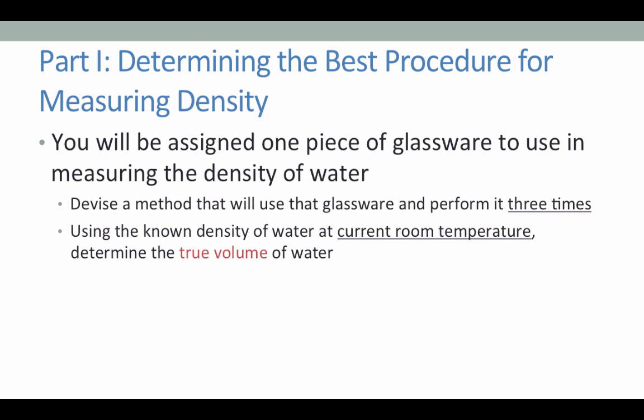You will be divided into groups, and each group will be assigned one piece of glassware to use in measuring the density of water. As I said earlier, the density of water is about one gram per milliliter. In fact, it is exactly one gram per milliliter at four degrees Celsius. At other temperatures, water becomes less dense. Therefore, we will report the density of water at the temperature that we actually have. Your task will be to devise a method that will use the glassware you were assigned to measure a volume of water and to weigh it and perform this process three times. You will record the volume as you measured it from the gradations on your glassware.